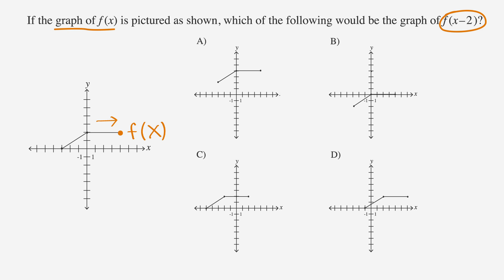So we can cross out answer choice A because it moves the graph up, and cross out choice B because it moves the graph down.